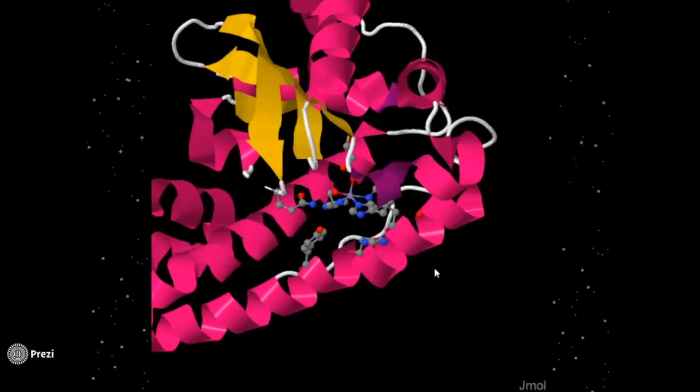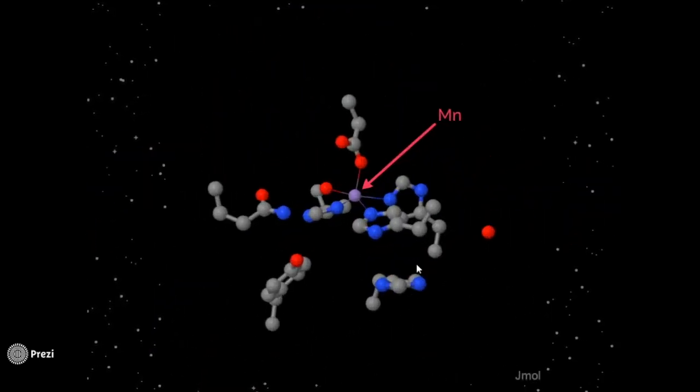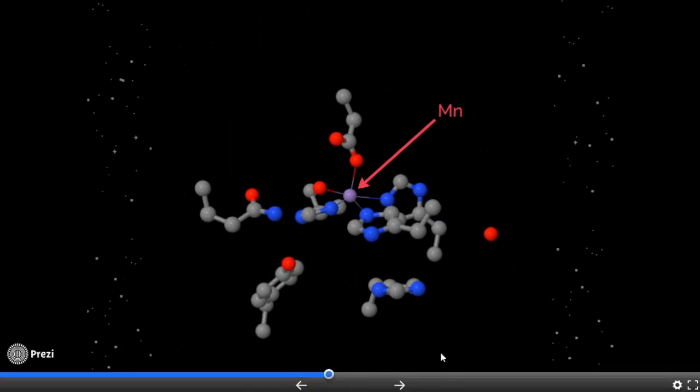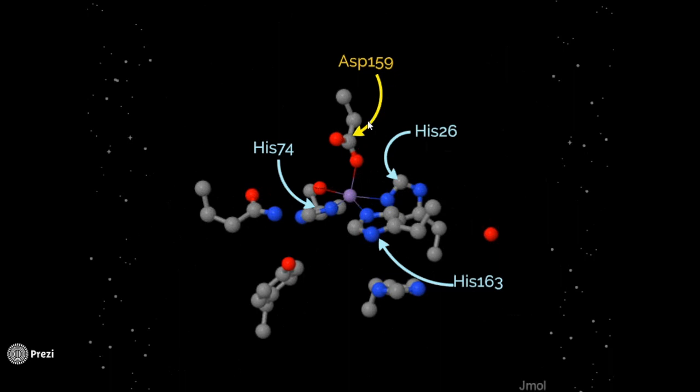Let's get a closer look at the active site, but this is still a little too frilly, so we'll cut them all away and just get to the important residues. The central atom is manganese. It is being held in place by these three histidine residues, 26, 74, and 163, as well as aspartate 159.